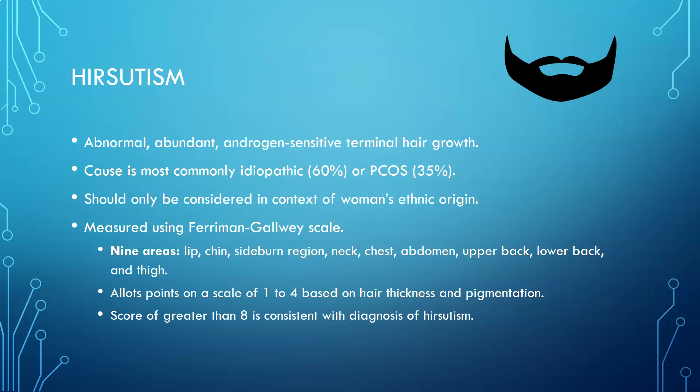Hirsutism is abnormal, abundant androgen-sensitive terminal hair growth in areas such as the lip, chin, sideburn regions, neck, chest, abdomen, upper back, lower back, and thighs. The most common cause is idiopathic, or it can be PCOS. Ethnic origin should be considered, as some women may naturally have some facial hair. It is measured using the Ferriman-Gallwey scale, evaluating nine areas on a scale of one to four; a score greater than eight is consistent with a hirsutism diagnosis.